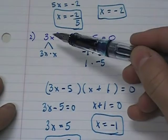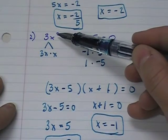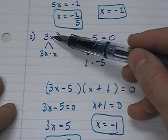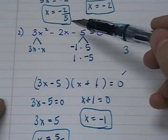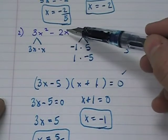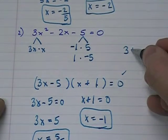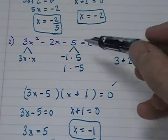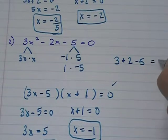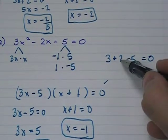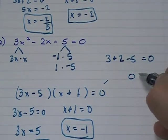So take this negative 1. Negative 1 squared is 1. And 3 times 1 is 3. So we get 3. Negative 2 times negative 1 is plus 2. And then minus 5. Well, 3 plus 2 is 5. And 5 minus 5 equals 0.